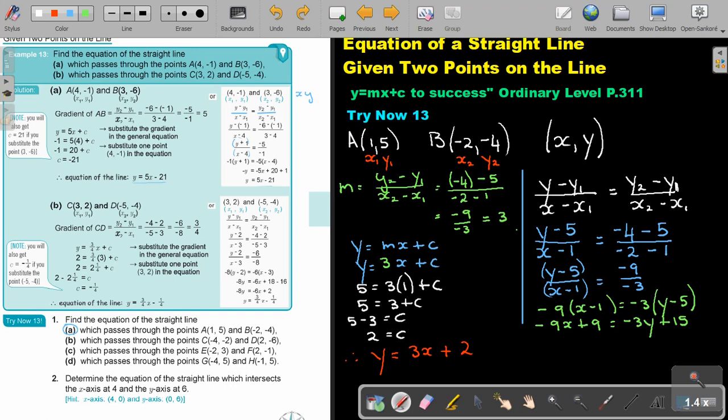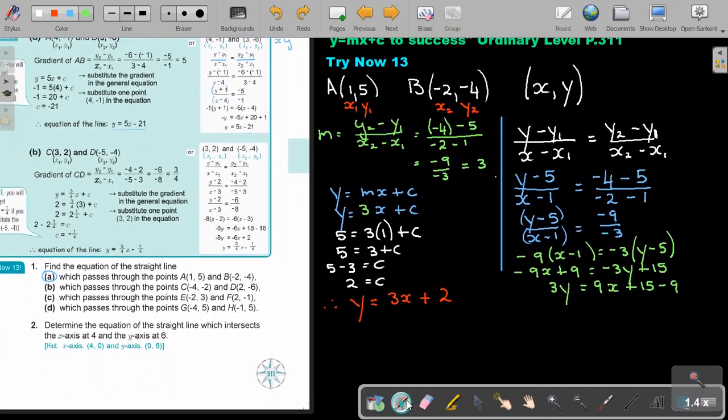This is going to be negative 9x plus 9, and that's negative 3y plus 15. Now I'm just going to rearrange. Take this one over. So positive—it's not necessary to write the positive thing. So it's 3y. I'm taking this one over, so it's 9x, and this is the 15. This one comes over minus 9. So it's going to be 3y equals 9x. If you say 15 minus 9, that's going to be 6. By simplifying it, I divide everything by 3.